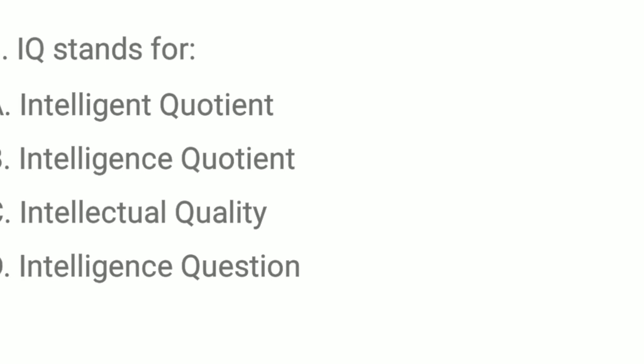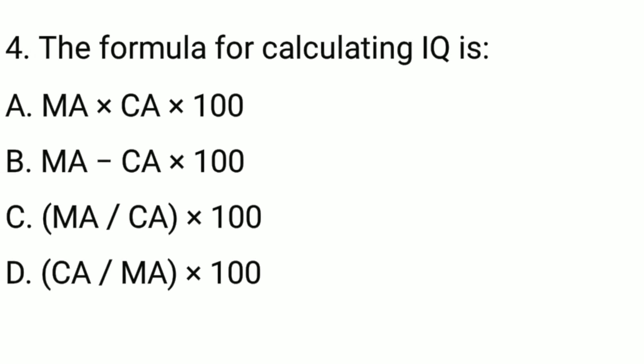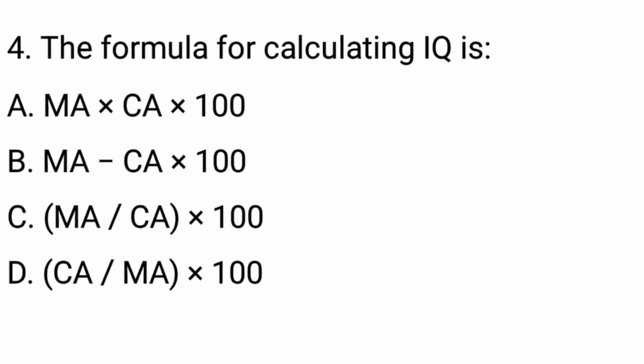Q3. IQ stands for... The correct option is option B: Intelligence Quotient. Q4. The formula for calculating IQ is... The correct option is option C: MA divided by CA multiplied by 100.